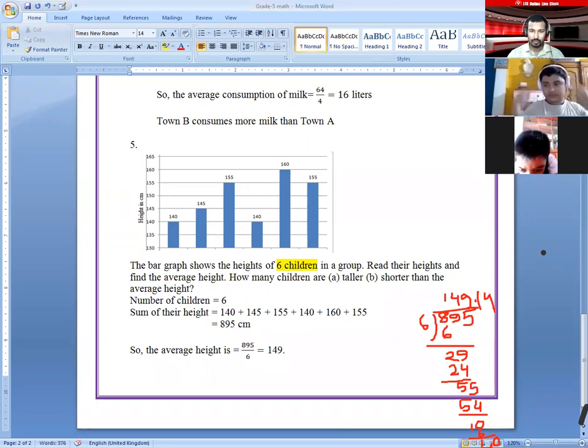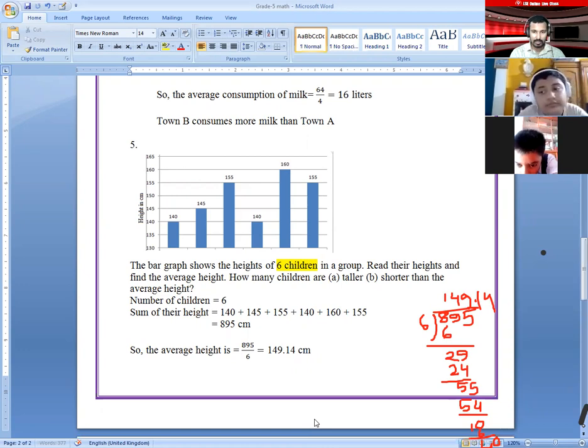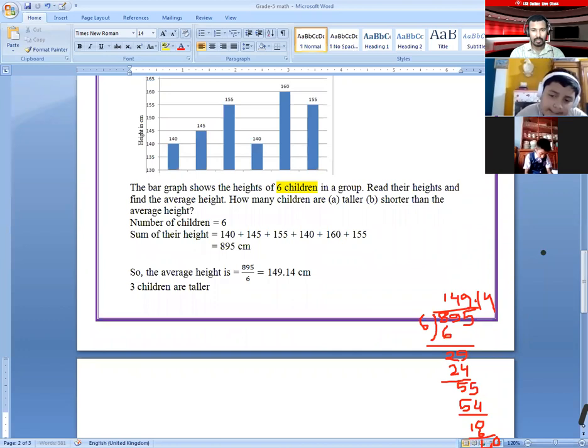How many children are taller than average? More than 149 - one student, two students, three students. Three children are taller. And three children are shorter than average height.